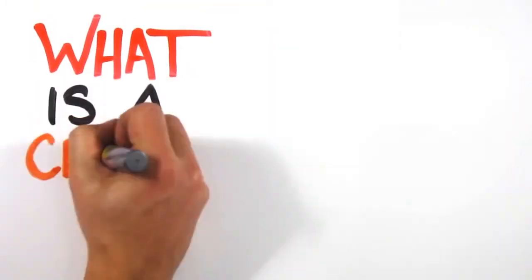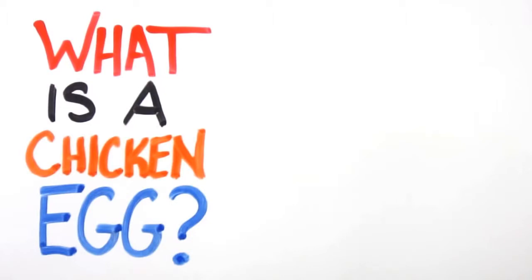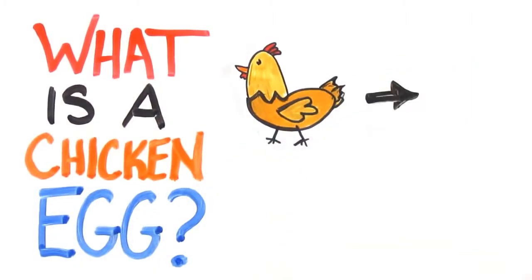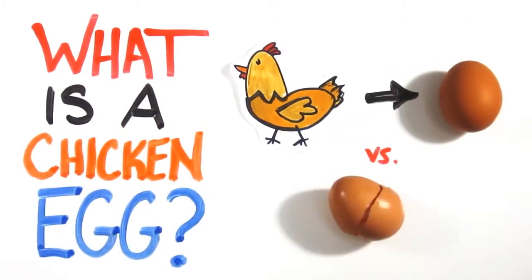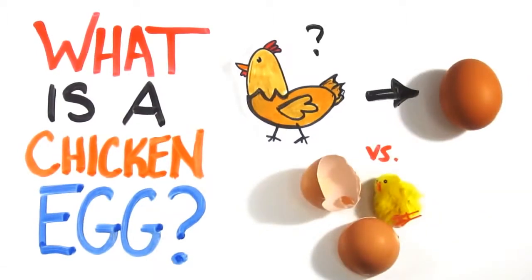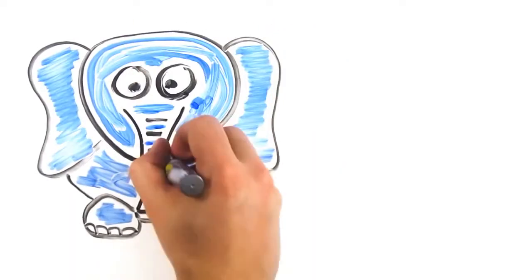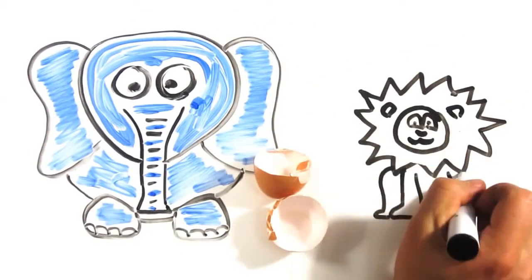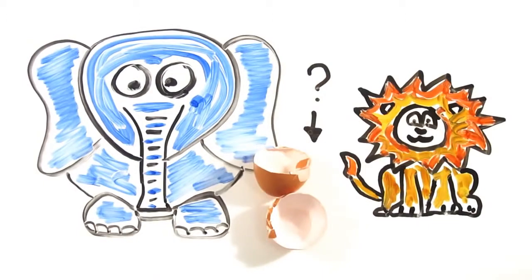But this all depends on the nature and definition of a chicken egg in the first place. After all, is a chicken egg an egg laid by a chicken, or one that simply contains a chicken? Obviously the OV-17-bearing chicken had to come from somewhere, but if an elephant laid an egg from which a lion hatched, would it be an elephant egg or a lion egg?